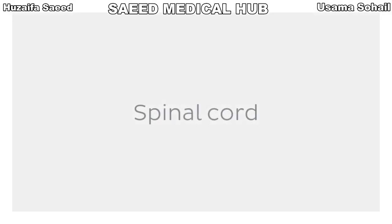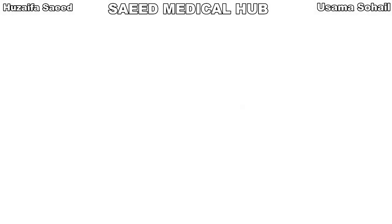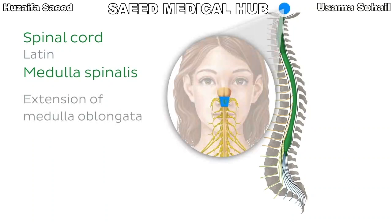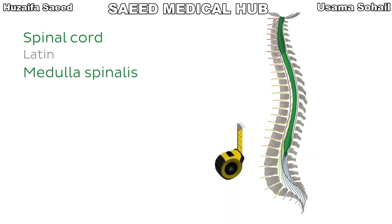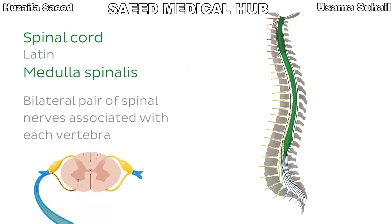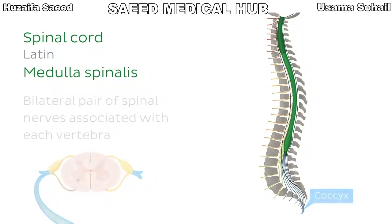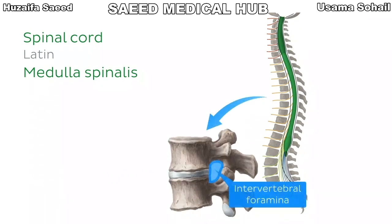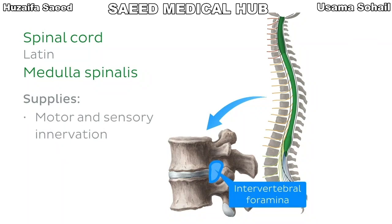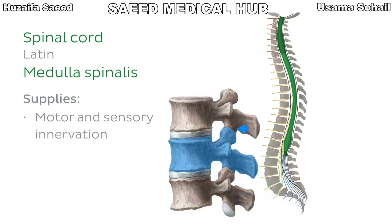Now let's turn our attention to the basic gross anatomy of the spinal cord. The spinal cord is a long cylindrical structure which starts off as an extension of the medulla oblongata of the brain stem and occupies the vertebral canal along much of the vertebral column. It is 42 to 45 centimetres in length, depending on the size and sex of the individual. A bilateral pair of spinal nerves is associated with each vertebra of the spinal column down to the coccyx, which only has one pair of nerves associated with its three to five segments. These spinal nerves exit the vertebral column through the intervertebral foramina and go on to supply motor and sensory innervation to most of the body. As we go through the various regions of the spinal cord, we'll highlight whether the spinal nerves exit through the intervertebral foramina above or below their corresponding vertebrae.